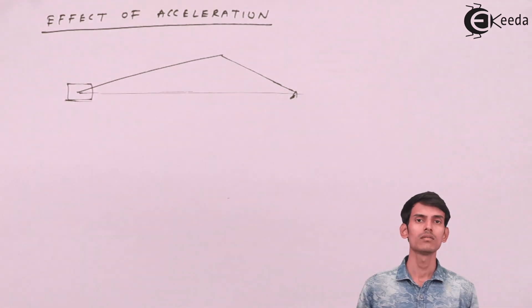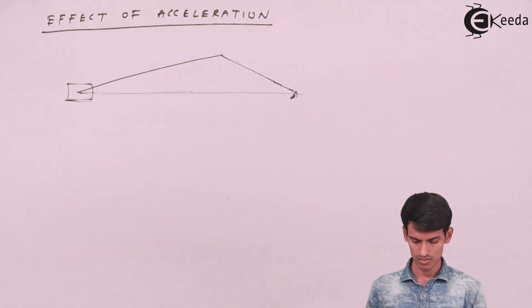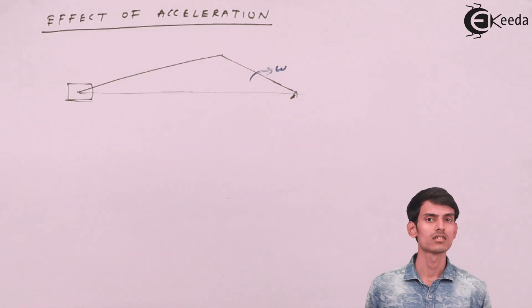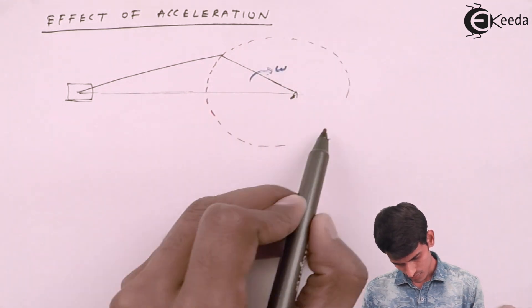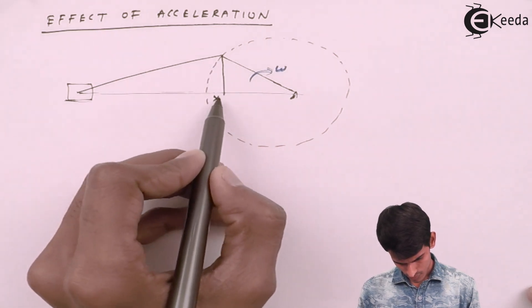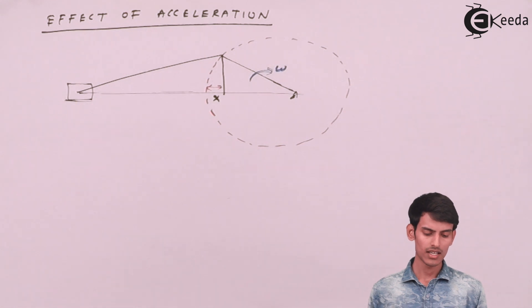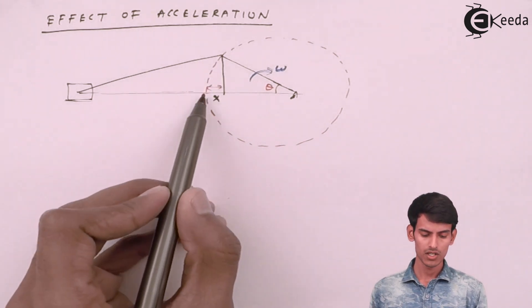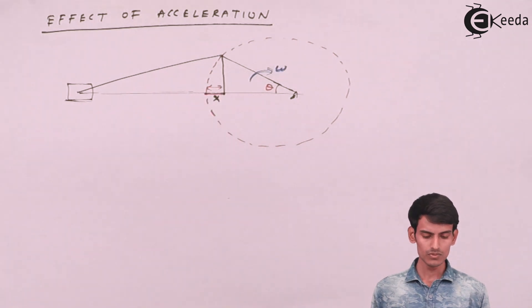I've drawn the crank and the connecting rod along with the piston, which is called a slider. The crank has some angular velocity omega. When the crank moves by a certain angle, it will displace the slider by a certain distance. Suppose initially the crank was horizontal and has now moved by a certain angle theta — the displacement covered is x. When it was horizontal this point would have been here, and now it has moved so the linear displacement is x. We need to find x.